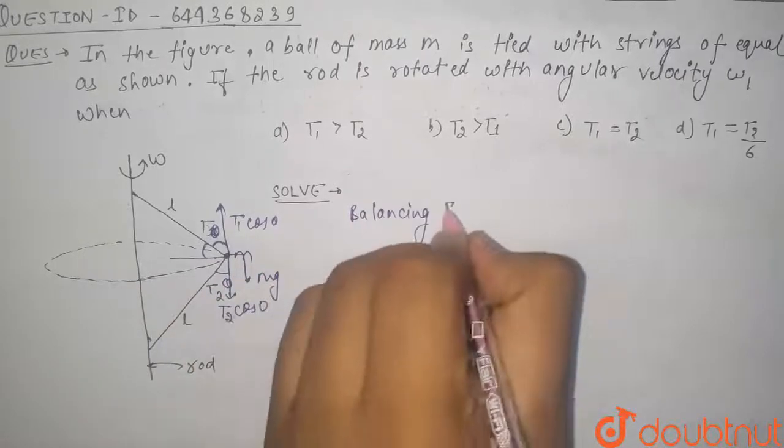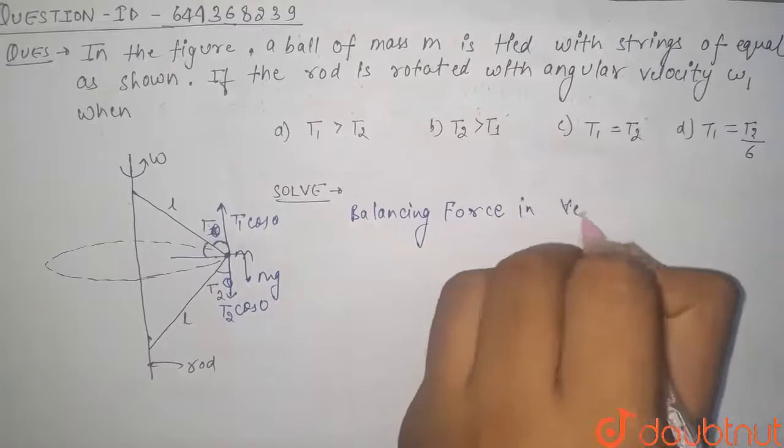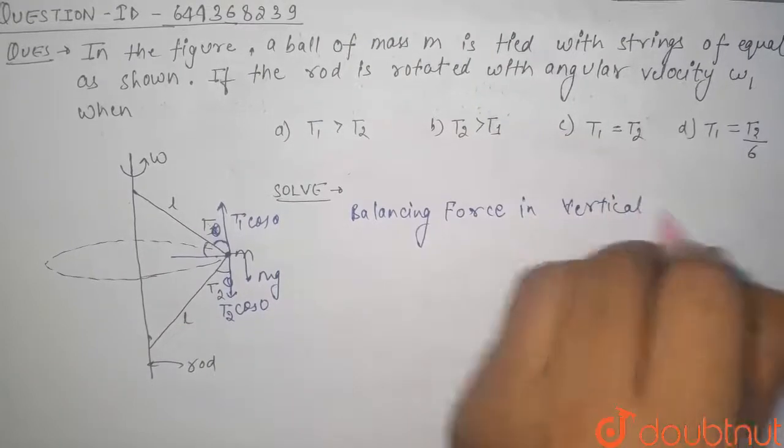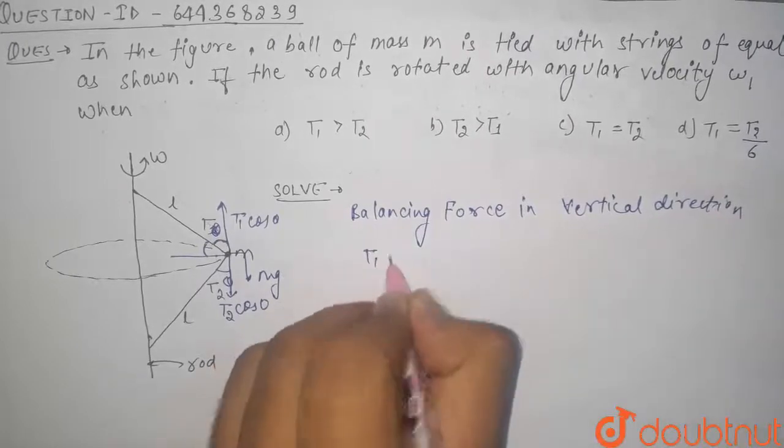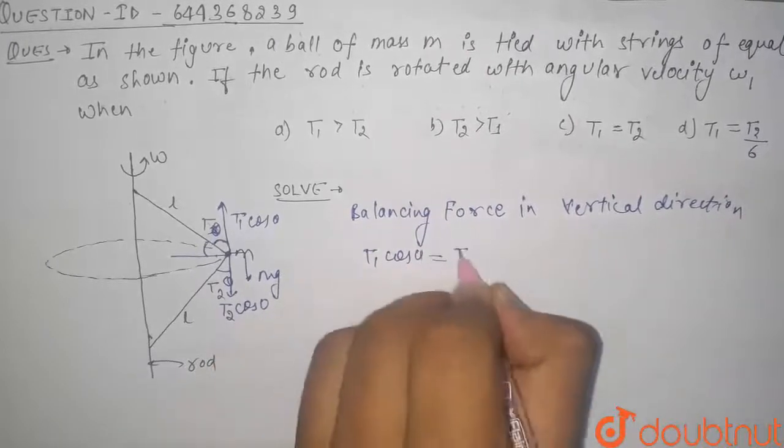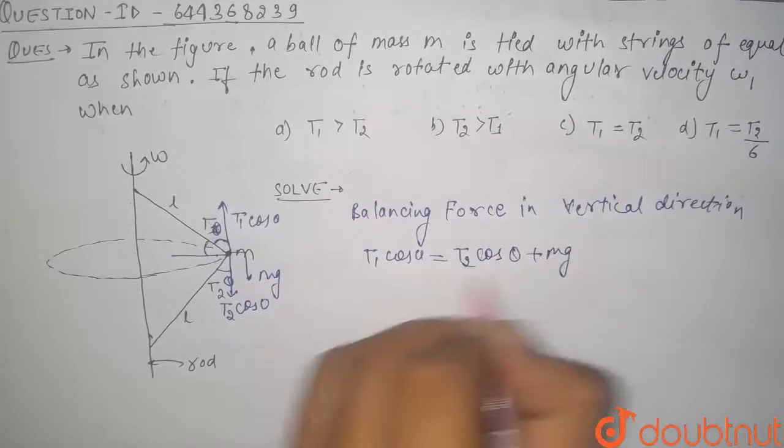And the weight mg will also act downwards. So from here we can write it as balancing forces in vertical direction.